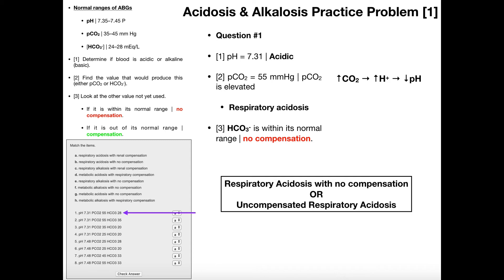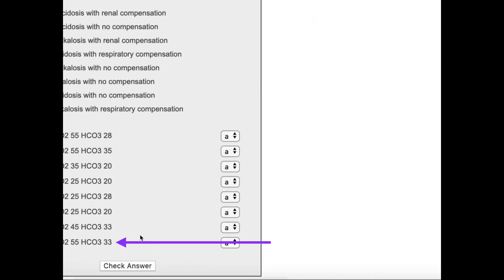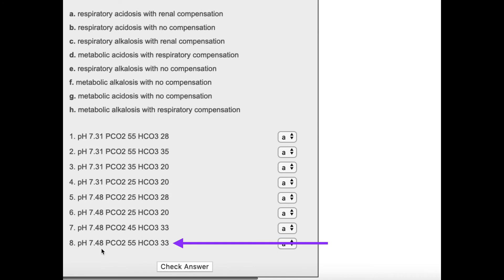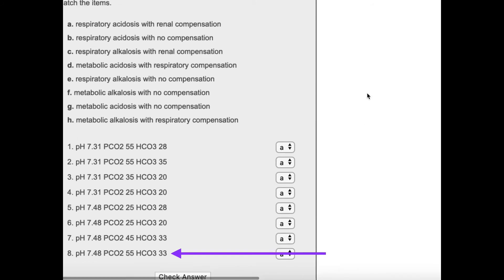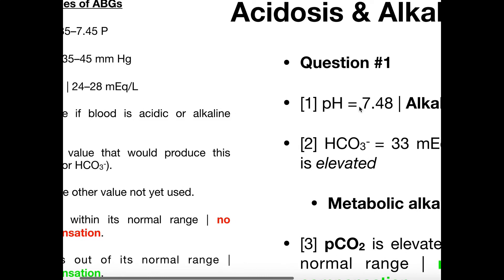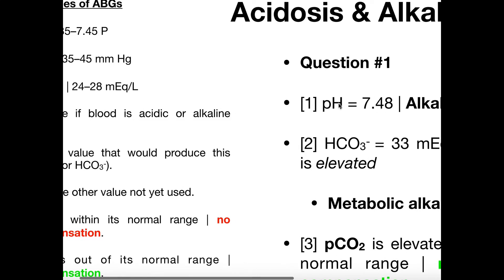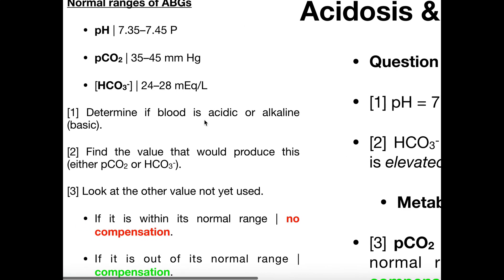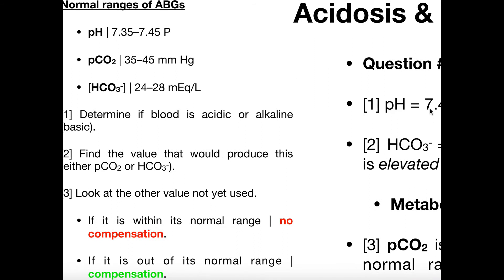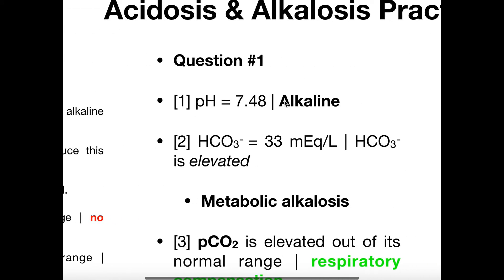Let's work a second problem. We have a pH of 7.48, a pCO2 of 55, and a bicarbonate level of 33. First, the pH is 7.48. Our normal pH range is 7.35 to 7.45, and 7.48 is above the upper limit, so this is alkalosis. We write that down.